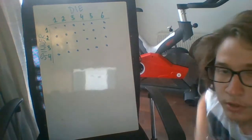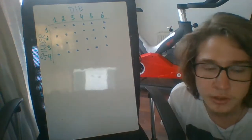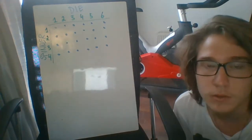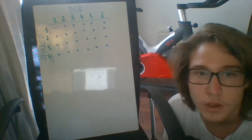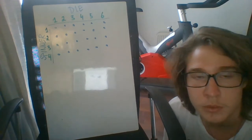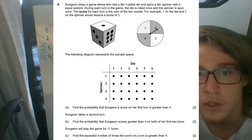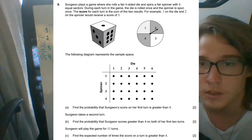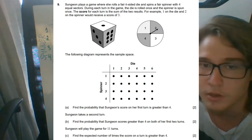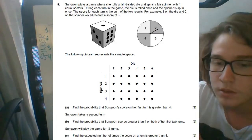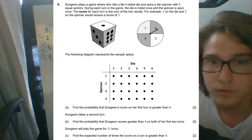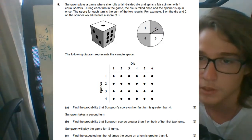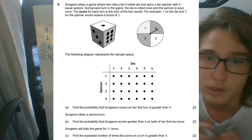Hello everybody. Today we're going to be going over a probabilities problem at the IB math studies level. The problem tells us that Seung-Gwan is playing a game where she rolls a die and a spinner, then she adds up the number on the die and the number that comes out on the spinner, and that is her score.